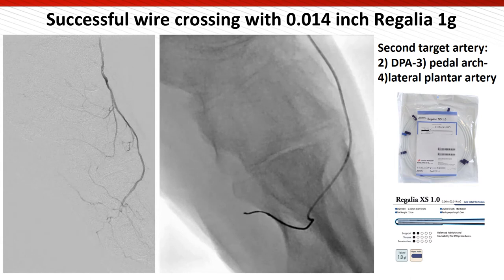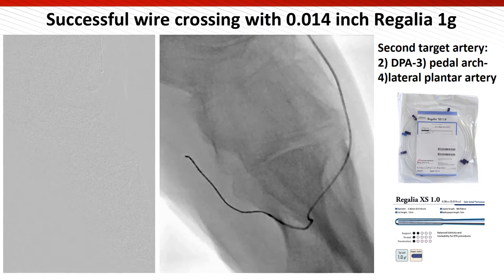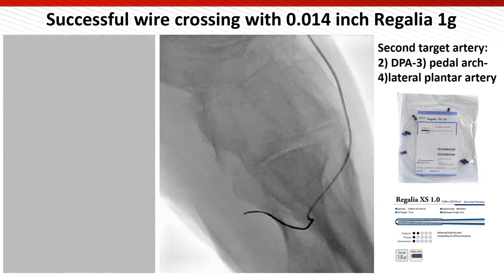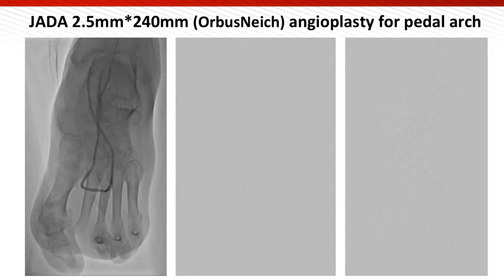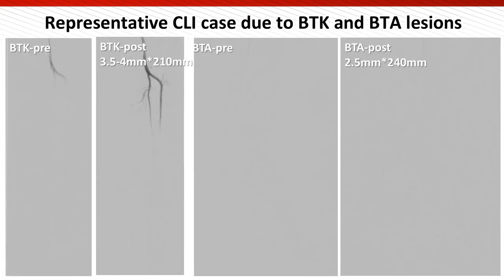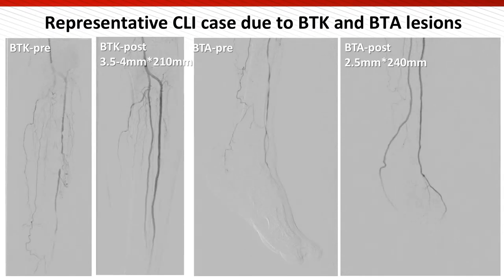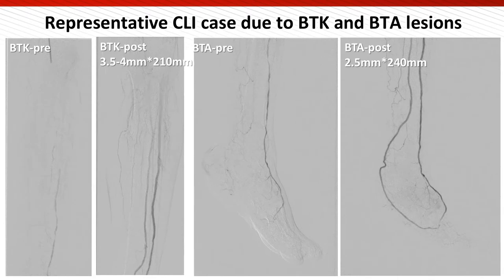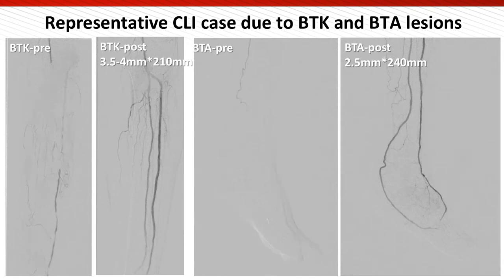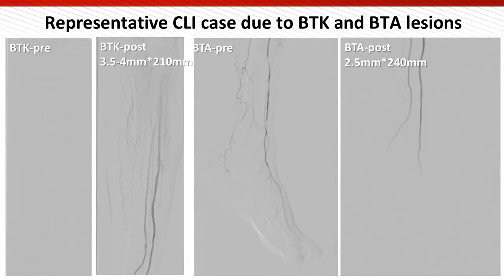After successful crossing of the pedal artery, there are some branches at the lateral plantar artery. In this situation, Regalia wire is again used for selecting the main branch, as shown in this video. After successful wire crossing, angioplasty for the entire artery was done, and the completion angiogram shows complete revascularization with pedal artery flow. In this case, 3.5-4mm pedal artery angioplasty was done for the BTK region, and 2.5mm angioplasty was done for the BTA with pedal artery. A perfect angiogram is shown here.